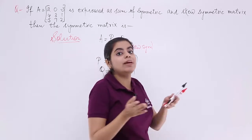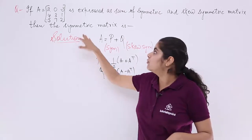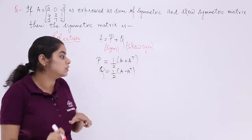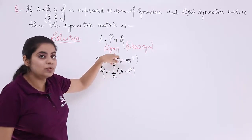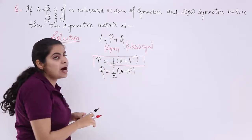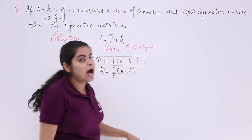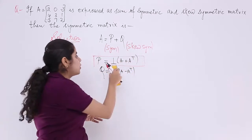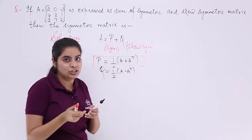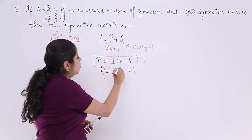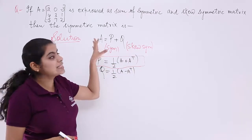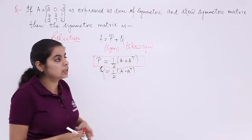We only need to find the symmetric factor, which is P. We will not solve for Q. So we need to find half into (A + Aᵀ), because P is the symmetric factor. A is given in the question, but Aᵀ is not given, so we need to compute it.